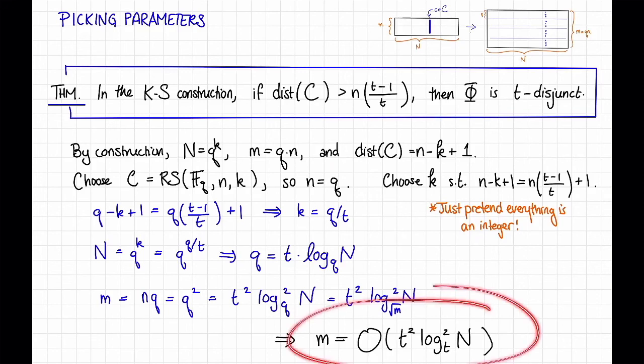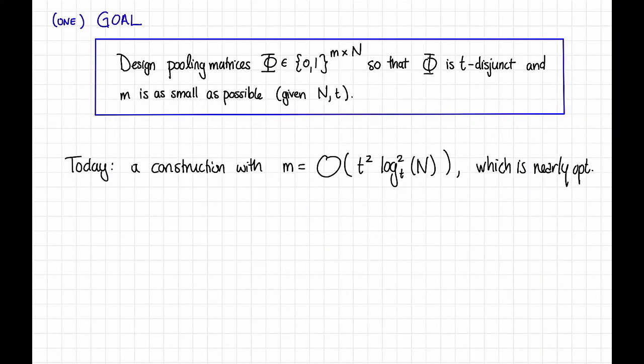And this is what we wanted to show. So returning to our goal here of designing pooling matrices that are t-disjunct with m as small as possible, we have now seen a construction with m equal to big O of t squared times the log base t of n squared. And as I mentioned in a previous video, this value is nearly optimal. Okay, so that's it for this video. To summarize, coding theoretic techniques can be useful in group testing. We saw one way to use coding theoretic techniques, in particular Reed-Solomon codes known as the Kautz-Singleton construction. There are actually many other ways to use coding theory techniques to help with group testing and its extensions and variants. We may see some of them in a later video.